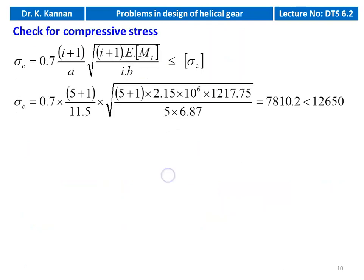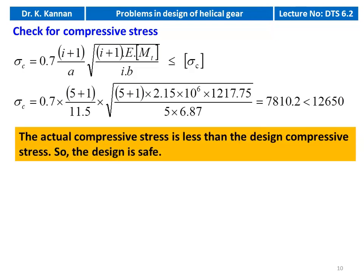We check the compressive stress: σC = 0.7 × (i+1)/a × √[(i+1) × E × Mt / (i × b)]. Substituting: σC = 0.7 × (5+1)/11.5 × √[6 × 2.15×10⁶ × 1217.75 / (5 × 6.87)] = 7810.2 kg/cm², which is less than the design compressive stress of 12650 kg/cm². The design is safe.